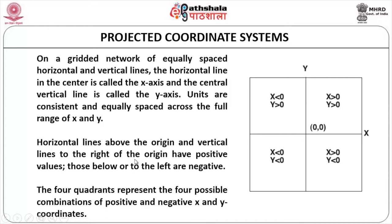Horizontal lines above the origin and vertical lines to the right of the origin have positive values. To the left, x will be negative and y positive. In the lower-left quadrant, both x and y are negative. In the lower-right, x is positive and y is negative. So the four quadrants represent plus-plus, minus-plus, minus-minus, and plus-minus respectively.